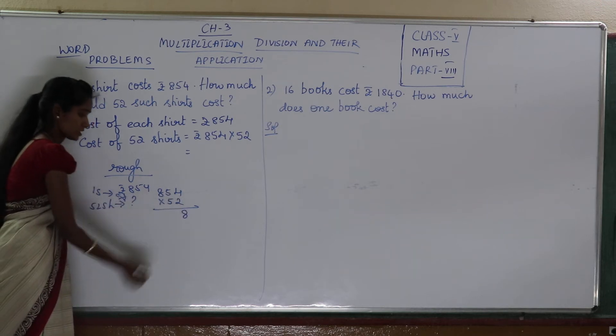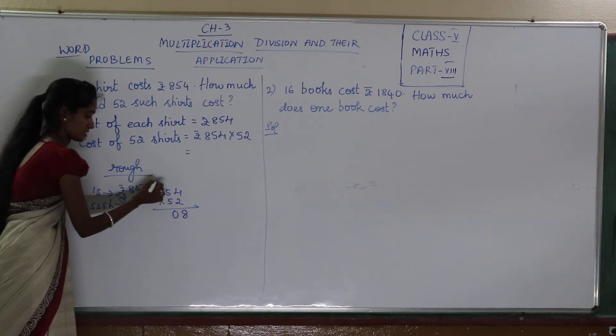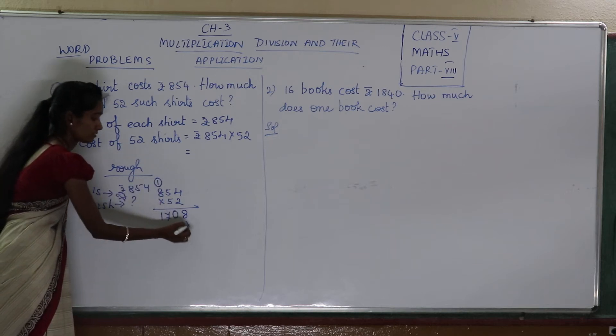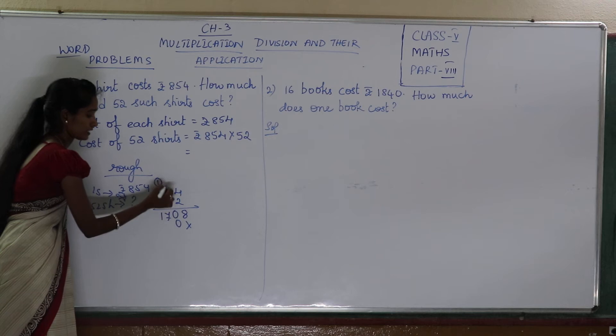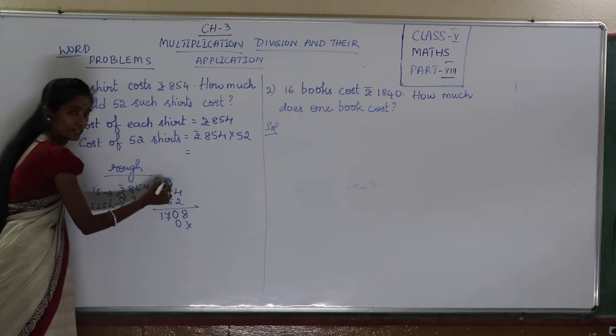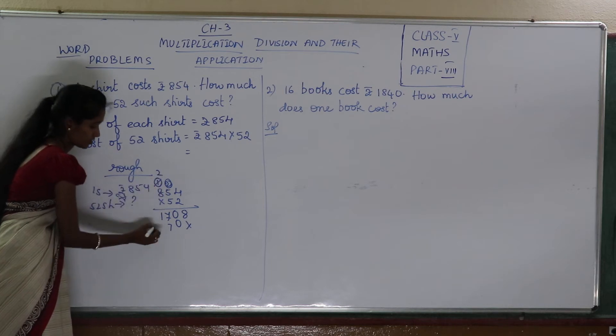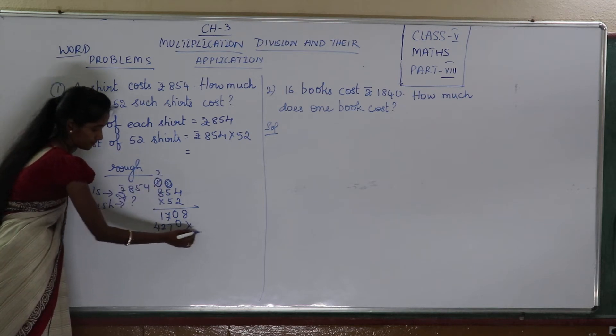Now see, 2 fours are 8. 2 fives are 10. 2 eights are 16 plus 1 is 17. 5 fours are 20. 5 fives are 25 plus 2 is 27. 5 eights are 40 plus 2 is 42.